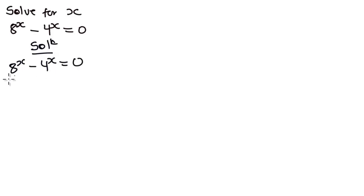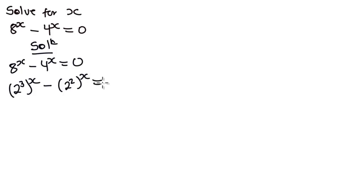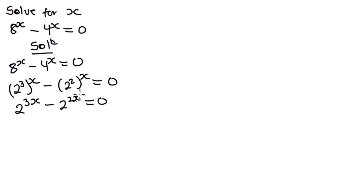We are going to rewrite it as 2 to the power 3, all exponent x, minus 2 to the power 2, all exponent x, equal to zero. This gives us 2 to the power 3x minus 2 to the power 2x is equal to zero. We use the property that a exponent m, all exponent n, is the same as a exponent m·n.